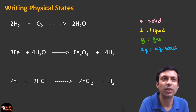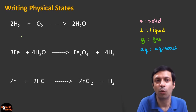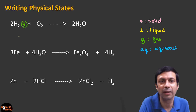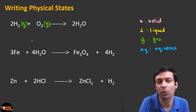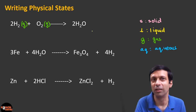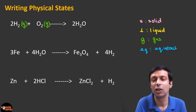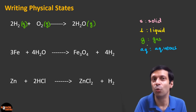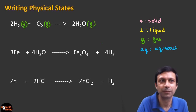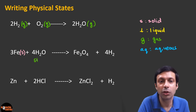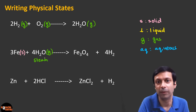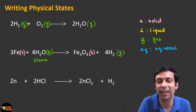Let's add the physical state to the equation: hydrogen plus oxygen combines to give water. Hydrogen is a gas, so we write G. Oxygen is also a gas, so G. For water — normally hydrogen and oxygen burn to give water vapor, so we represent it with G because steam is formed. If it were condensed to liquid water, we would put L. Now let's look at the next equation: iron is definitely a solid (S). The water used is steam, so G. Triferic tetraoxide formed is a solid (S), and hydrogen produced is a gas (G).